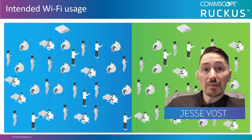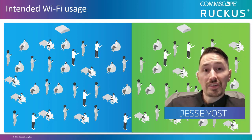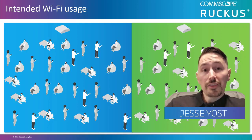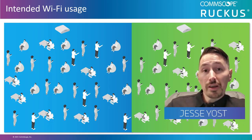Think of it like this: let's say we have an AP that can support 500 clients connected simultaneously. Now let's assume 400 clients are connected to that AP and they're all trying to stream HD video — the client experience is going to be much different than that same AP with only 30 clients connected.